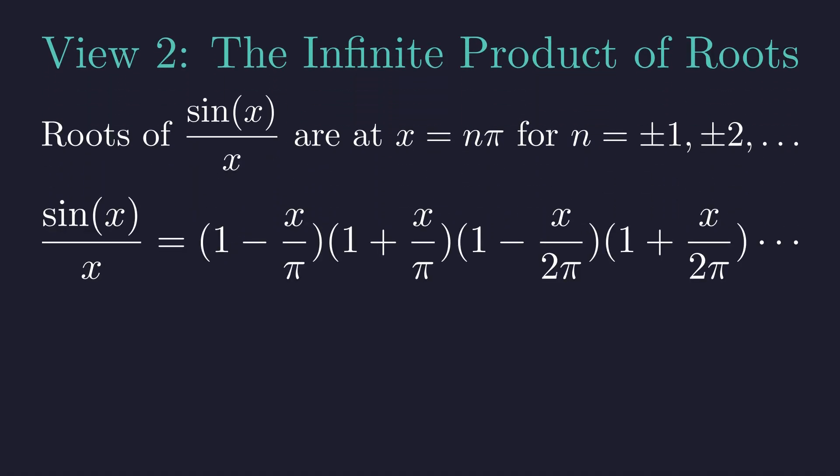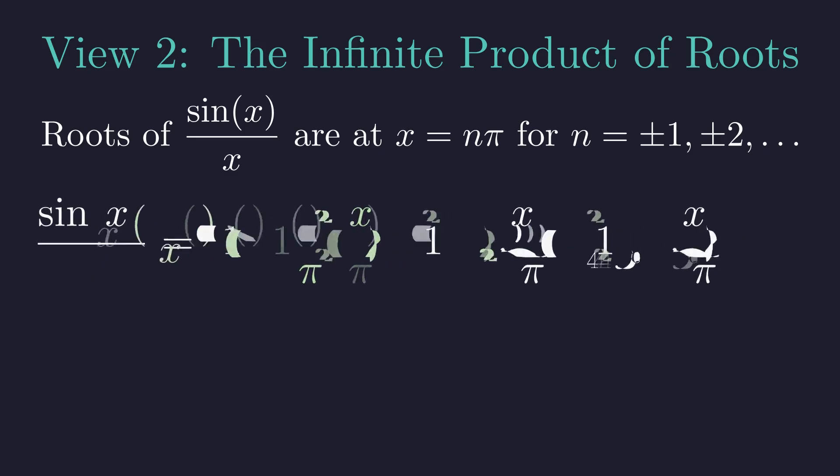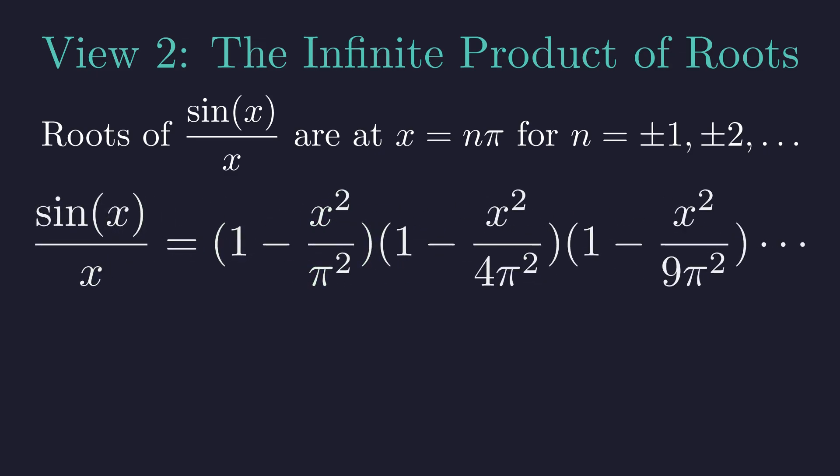Using the product formula, we express our function as this infinite product, with a term for each root. Watch what happens when we pair up the terms. The difference of squares formula says 1 minus a times 1 plus a equals 1 minus a squared. This simplifies beautifully. So this is our second representation of the same function.